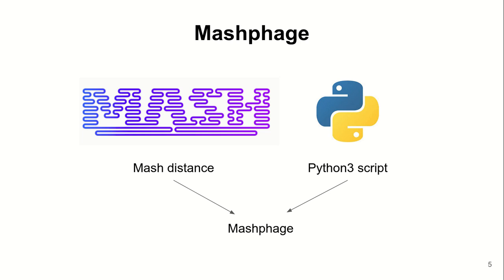To build our tool, we first downloaded all the sequenced phages reported on the actinobacteriophage database. Genomes were then split by clusters, constituting the positive set, and genomes considered as singletons constituted the negative set. Secondly, we tested various parameters to build the reference sketch space for our task.